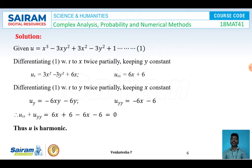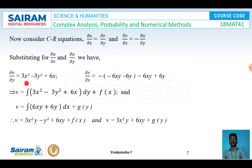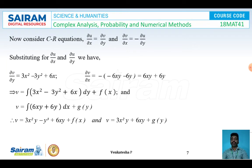Since u is harmonic, we can find the harmonic conjugate using ∂u/∂x and ∂u/∂y. Applying CR equations — replacing ∂u/∂x with ∂v/∂y and ∂v/∂x with −∂u/∂y — we get: ∂v/∂y = 3x² − 3y² + 6x and ∂v/∂x = −(−6xy − 6y) = 6xy + 6y.